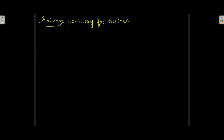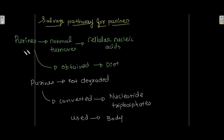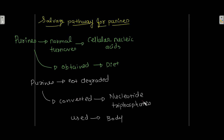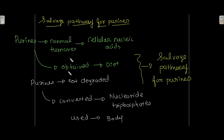Now let's look at the salvage pathways for purines. Purines that form from the normal turnover of cellular nucleic acid, or purines obtained from the diet which cannot be degraded — those purines are converted into nucleotide triphosphates and are used by the body. The purines which are not degraded are converted back to the nucleotide triphosphates. This is referred to as the salvage pathway for purines.